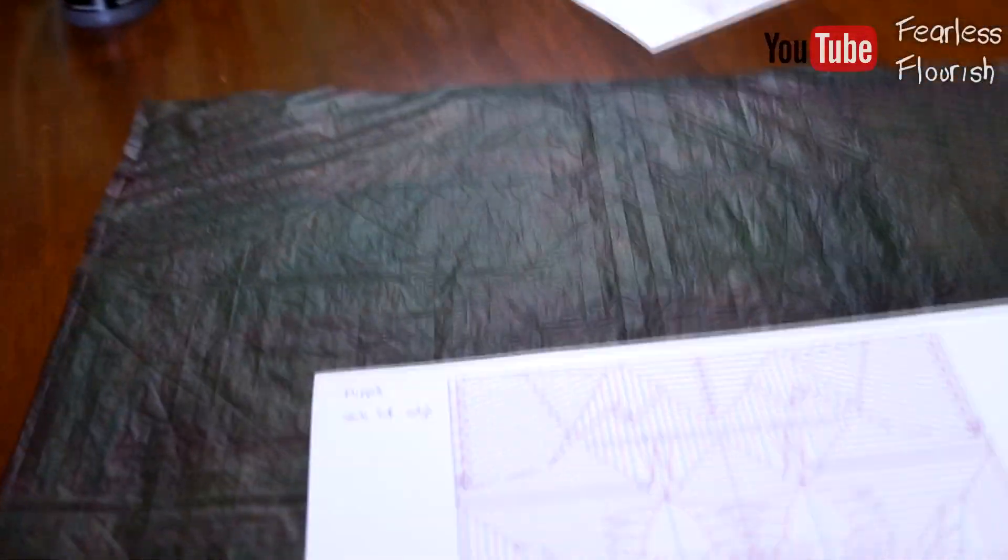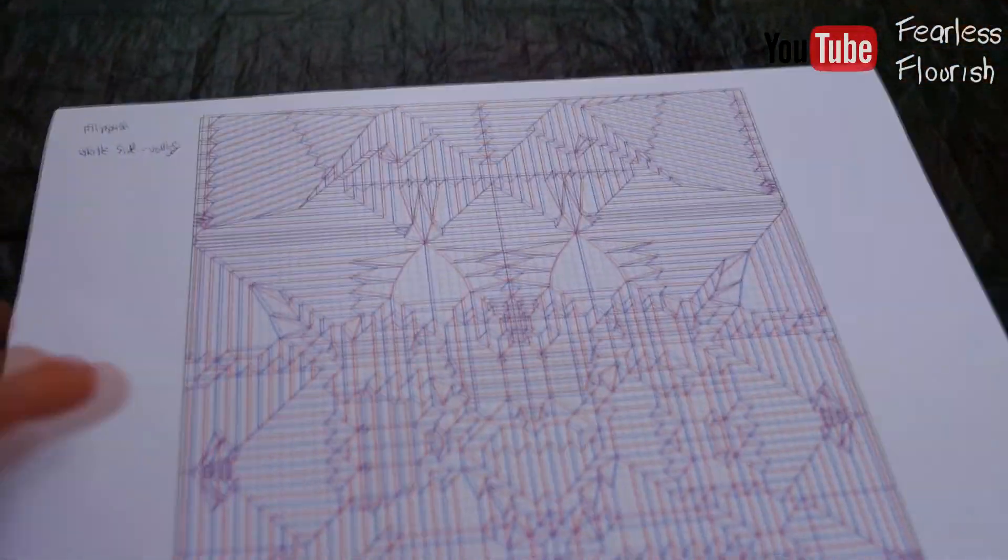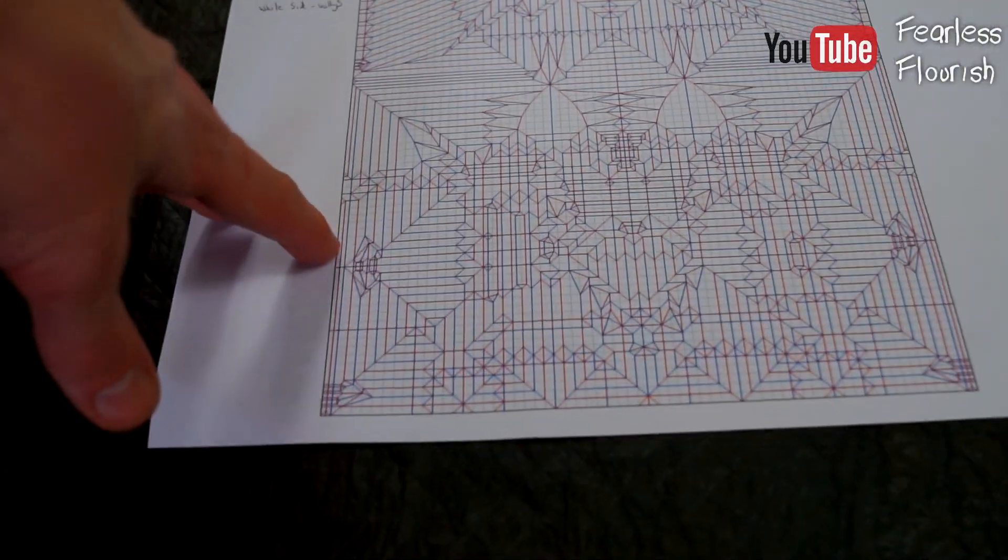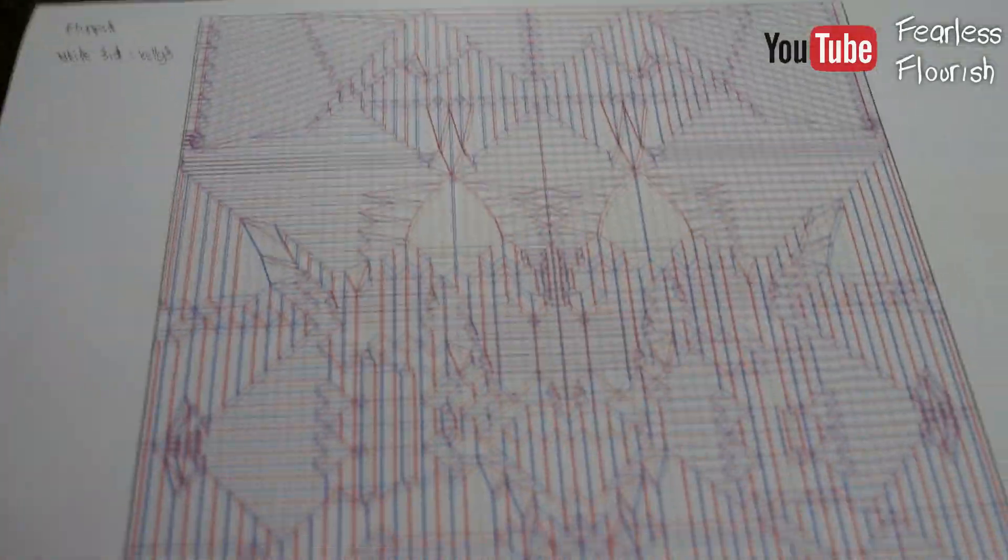So this crease pattern is for the white side. So this is white up.